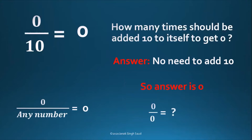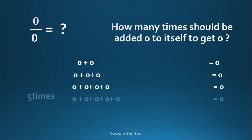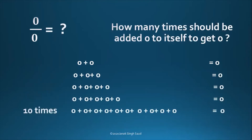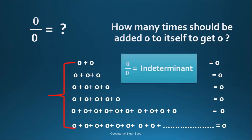Then what is 0 by 0? How many 0s should be added to itself to get 0? The answer could be 2 times, 3 times, 4 times, 5 times, 10 times, 100 times, a million times, a billion times — all the answers are correct. We cannot decide how many times we have to add 0 to itself to get 0. So in mathematical terms, 0 by 0 is indeterminate.